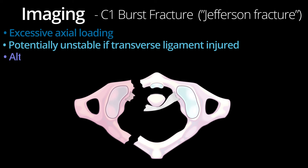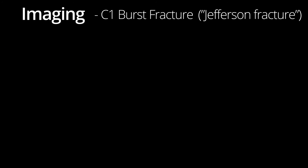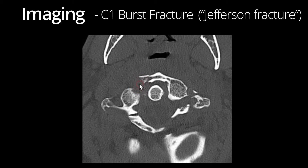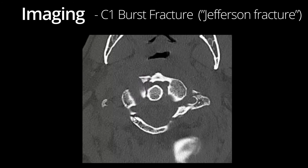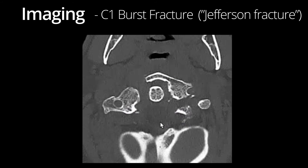Although rare, the transverse ligament can be injured in an avulsion type injury. If you see a small bony fragment in the region of the transverse ligament attachment to the atlas, consider this possibility. Here is a pretty extensive Jefferson fracture with four parts — fractures of the anterior and the posterior arches. The displacement of the fracture fragments anteriorly is concerning for possible injury of the transverse ligament, for which MRI could better evaluate.